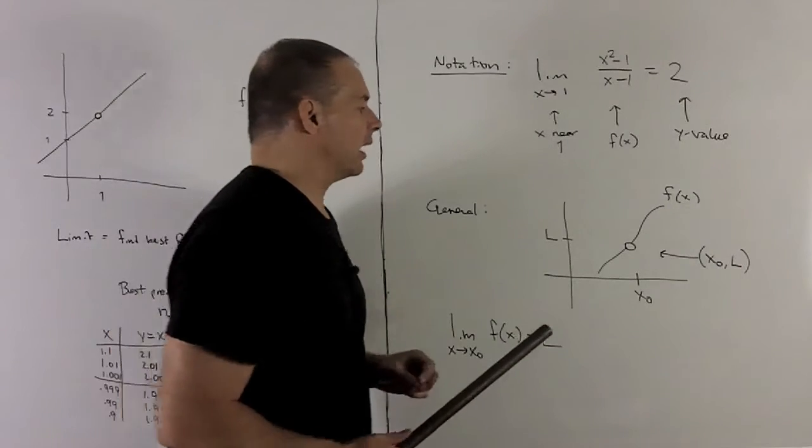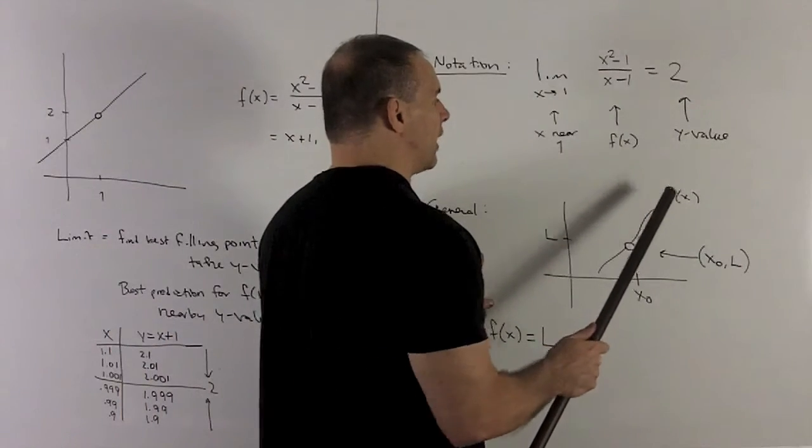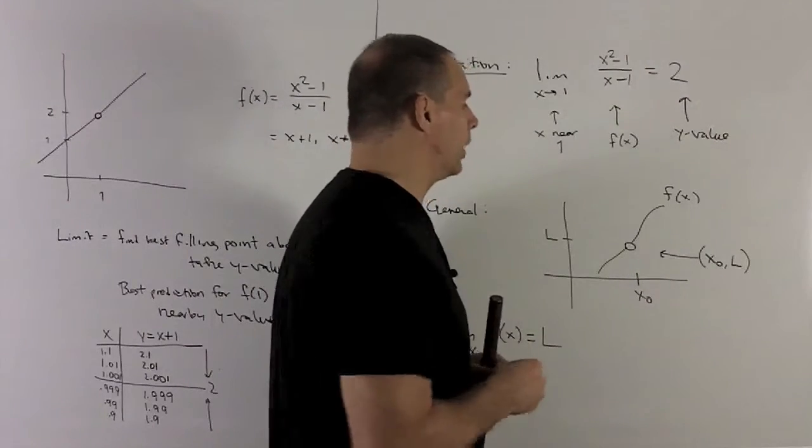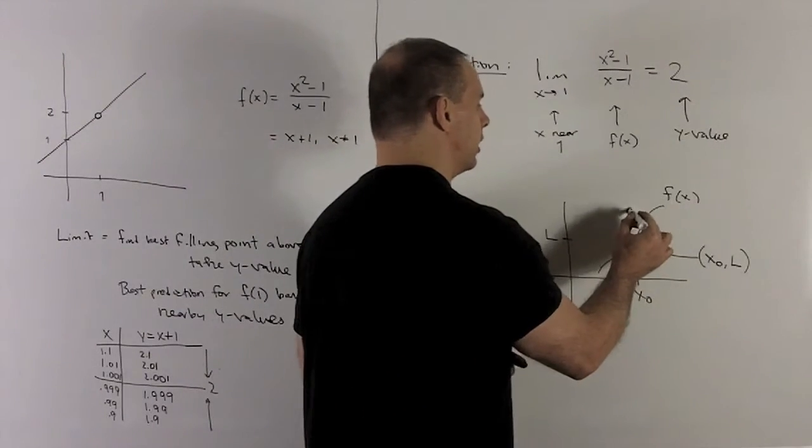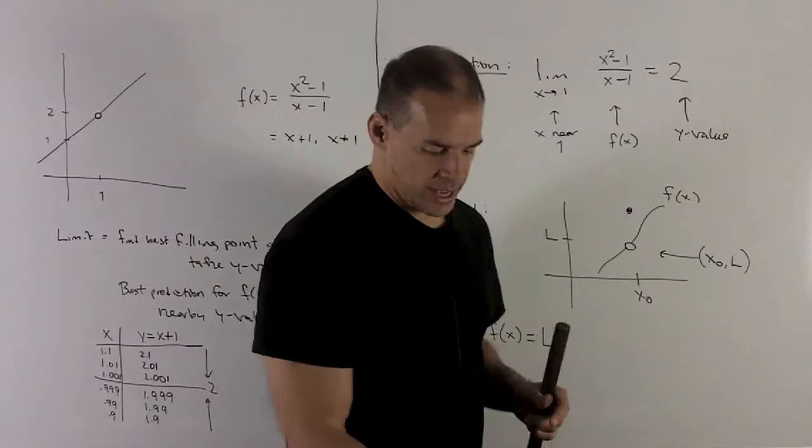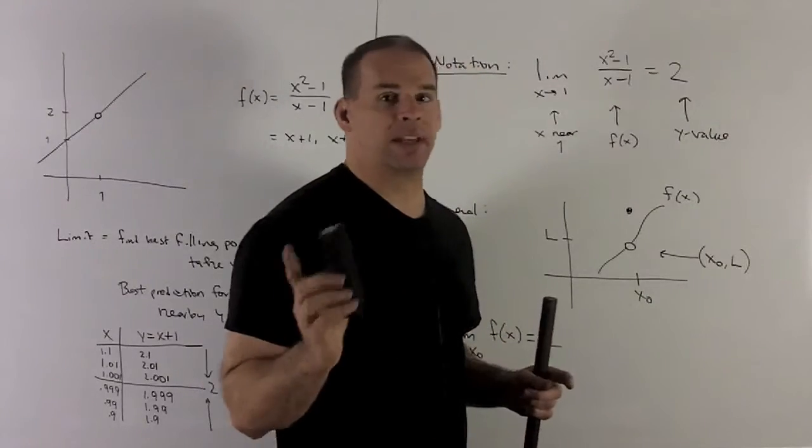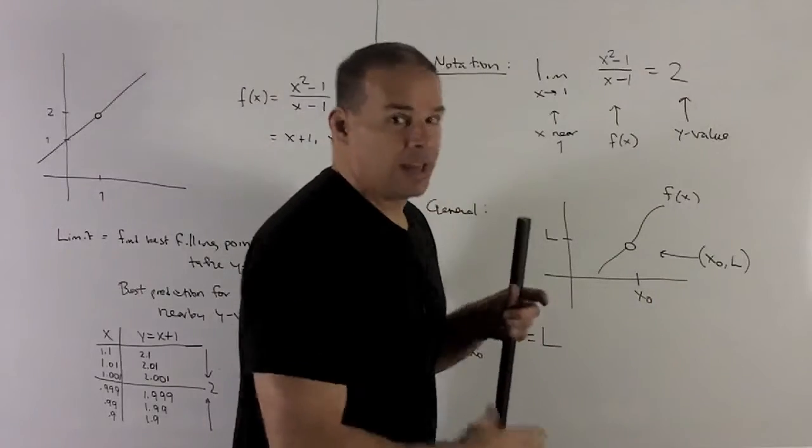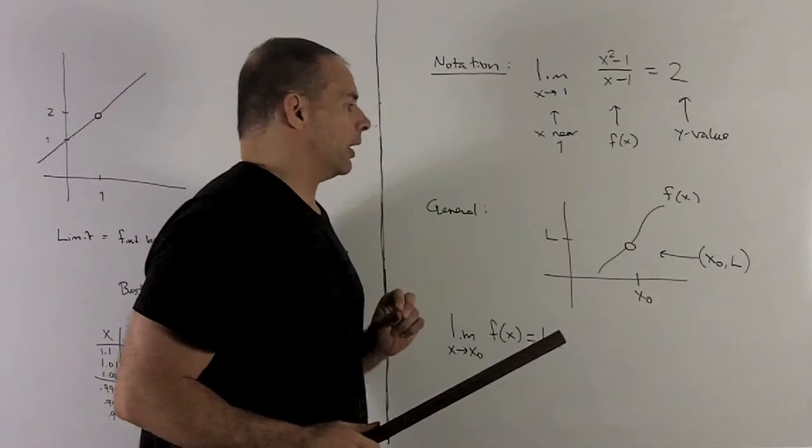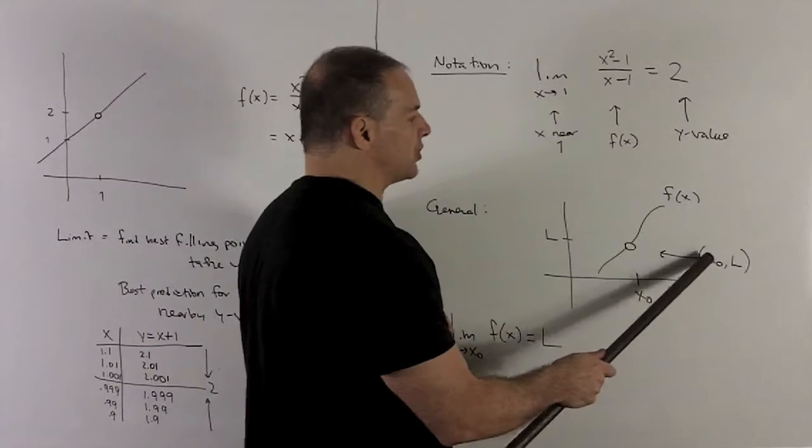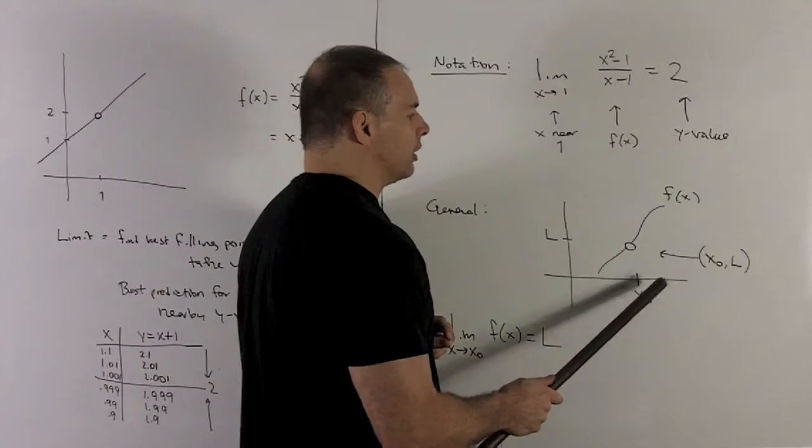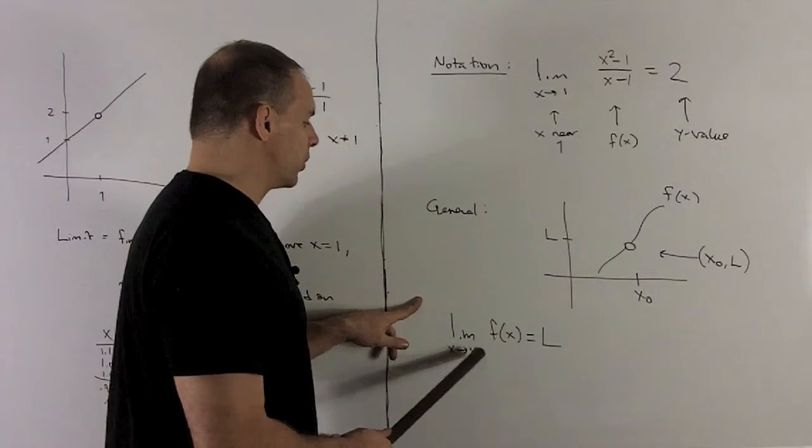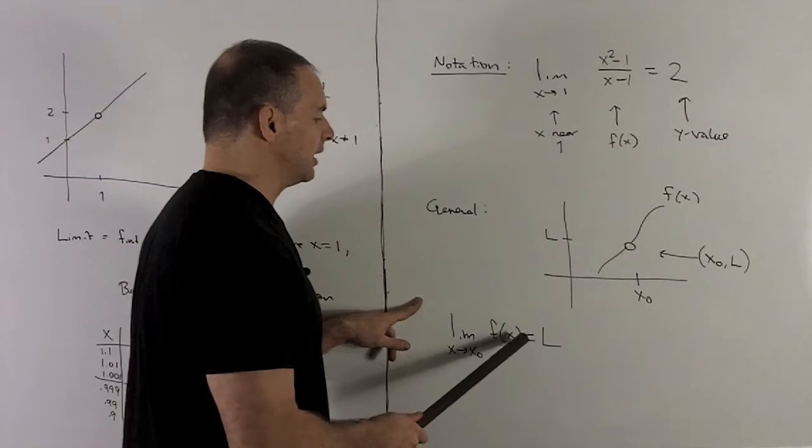In general, same idea. We're going to have our function f(x). Now, f(x) may actually be defined at your point. Say it's up here. The limit ignores that. The limit's just going to say if you happen to be defined at x₀, erase it. Now go to work, where's your best fitting point? If that point happens to be x₀, L, then we're going to define our limit to be L. And then we write that as limit x going to x₀ of f(x) equals L.